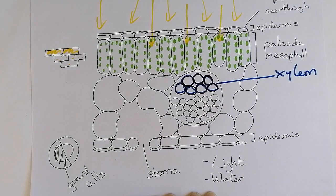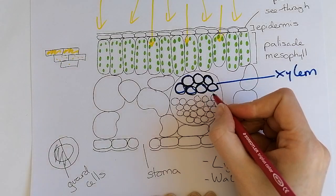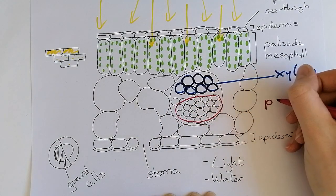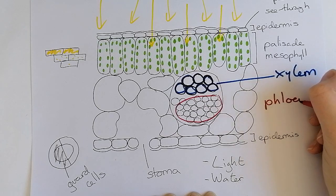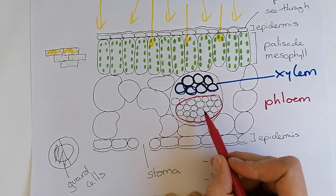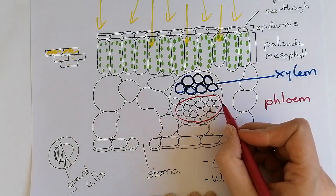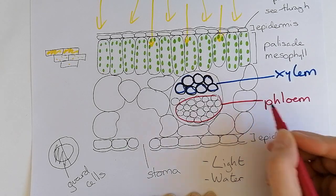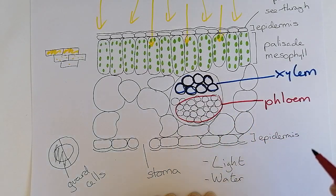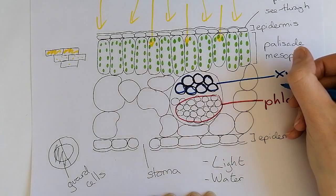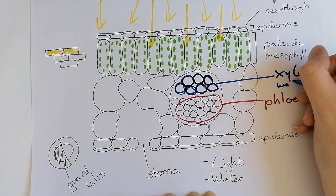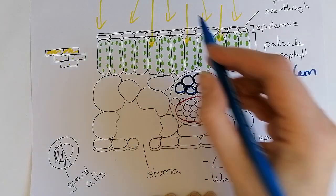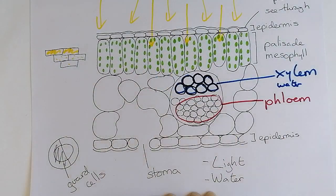We've also got here these ones which are our phloem cells. The phloem cells, which are easier to spot because the walls are less thick, collect up all the glucose that has been made and take that from the leaves everywhere else. So the xylem is delivering water for photosynthesis, and the phloem is taking the glucose away.